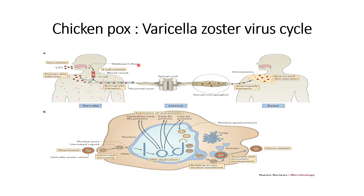it will go through their mouth, and when it interacts with the T-cells it will get activated and spread across the body. The initial infection that happens is known as the primary infection, and simultaneously what is happening is that there is retrograde transport into the spinal cord.